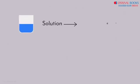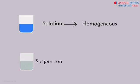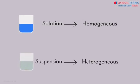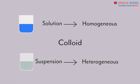So, if a solution is a homogeneous mixture and a suspension is a heterogeneous mixture, is there an intermediate mixture? Absolutely! Do you know what it is called? It has a fancy name and it is called a colloid. We will learn about it in our next video.